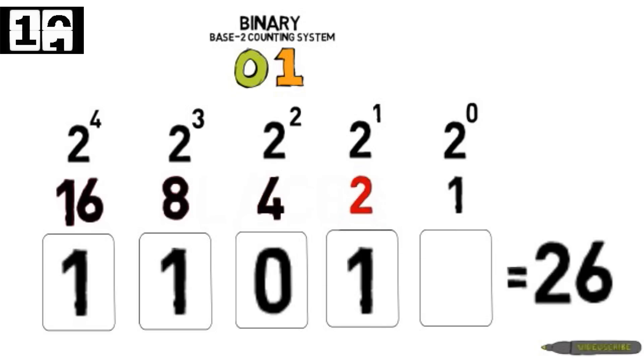4 won't go into 2, so we put a 0. But 2 will go into 2 once, remainder 0.